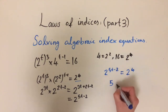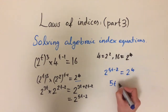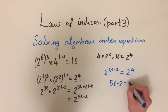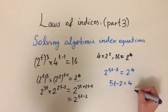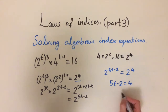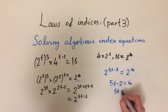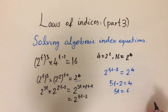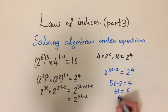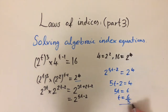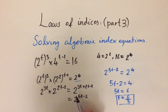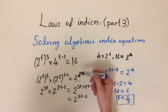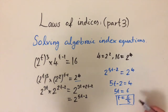We write 5t minus 2 equals 4. Adding 2 to both sides gives 5t equals 6, then dividing by 5 we get t equals 6 over 5. That's our solution. You can double-check it with a calculator, but this is the correct answer using this method.